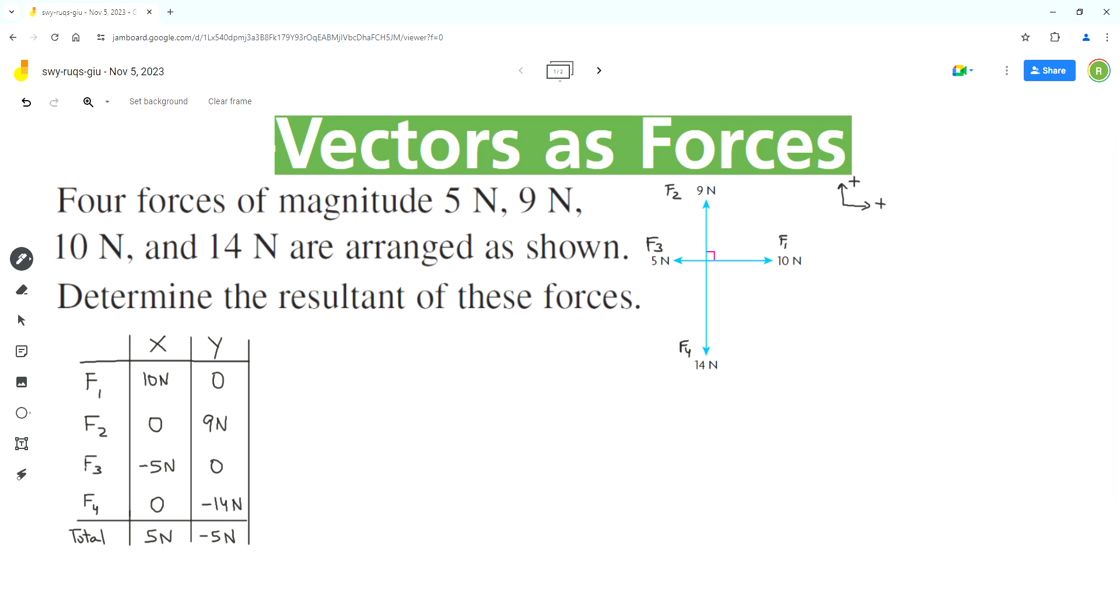Now we can use these x and y components of these four forces to find the resultant. We have to draw a vector triangle and we'll arrange these vectors in tip to tail or head to tail format to draw the vector triangle and find the resultant.